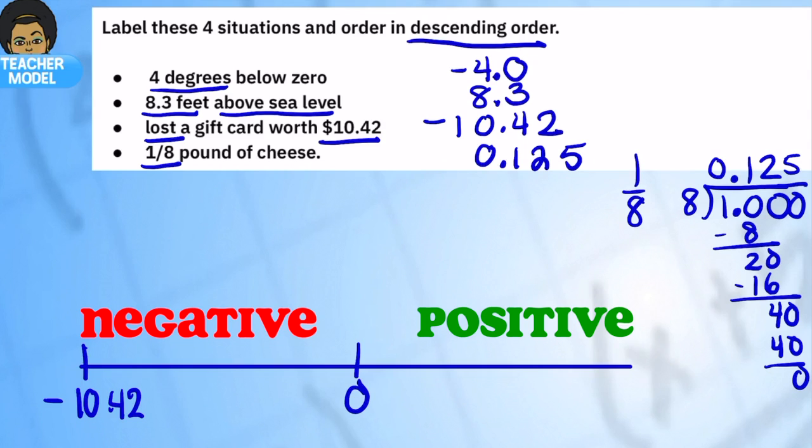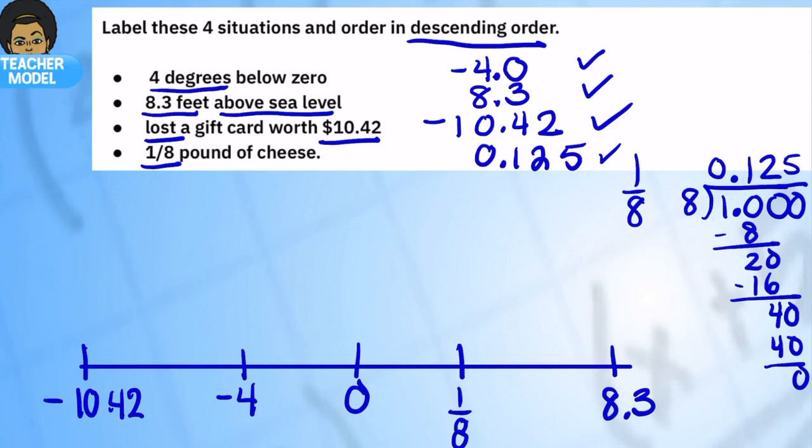The next greatest is 8.3 which is a positive so it's on the right side, followed by negative 4 so it's on the left side of zero, 4 degrees, and then we have the 1/8. And again these are just approximations, so here we have everything listed from least to greatest.